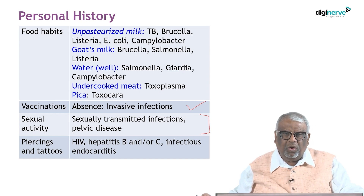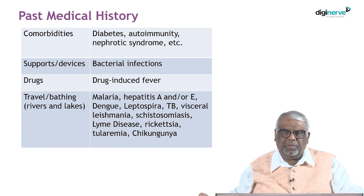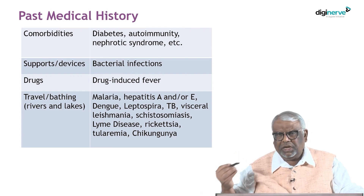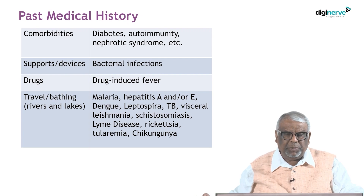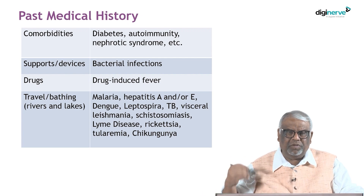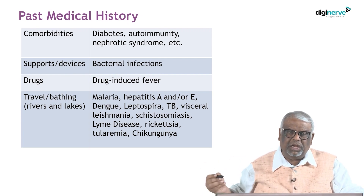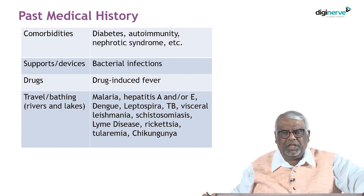Ask about past medical history and comorbidities — presence of diabetes, autoimmunity, and nephrotic syndrome — as these children may have associated immune deficiency and are more prone to infections. Ask about implanted devices and drugs, especially antipyretics and anti-inflammatory drugs given for long periods, which can paradoxically cause drug-induced fever.